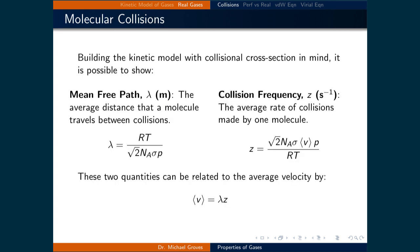Still within the context of the kinetic model of gases, it is possible to use the collisional cross section to define two more quantities, the mean free path and the collision frequency. The mean free path is the average distance a particle travels between collisions.